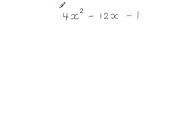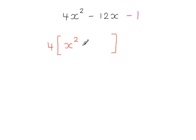Completing the square for 4x squared minus 12x minus 1. Again, the coefficient of x squared is not 1, so I'm going to start by taking that 4 out — dividing the first two terms by 4 and ignoring the minus 1 for now. I need x squared inside, and 4 times minus 3x gives minus 12x. I've multiplied 4 on the outside, and now the coefficient of x squared is 1.